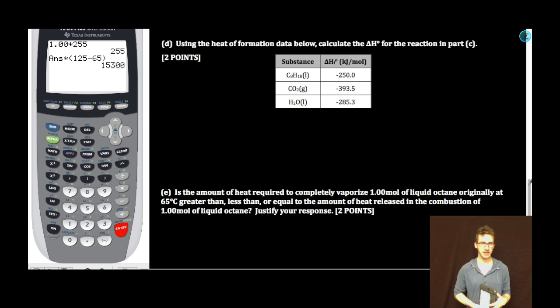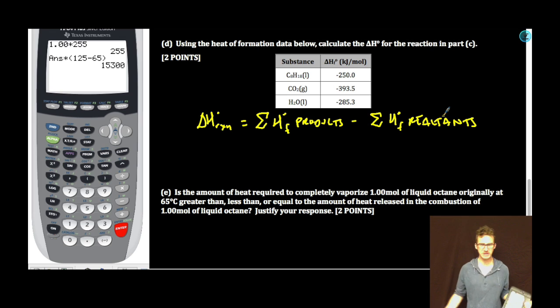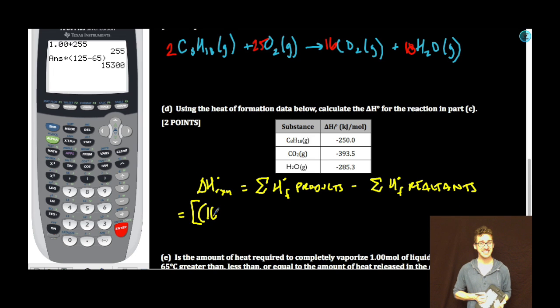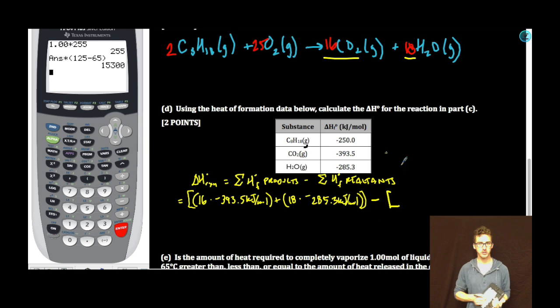Part D: Using the heat of formation data below, calculate the enthalpy change for the reaction in part C. Easy. Enthalpy change of a reaction from heat of formation data. On your formula chart. My products: 16 moles of carbon dioxide plus 18 moles of water, 18 times negative 285.3. Let's do the reactants: 2 moles. Plus 25 moles. Oh my goodness, I can't do this. They didn't give me it in the data table. No, it's an element. Recall that elements in their standard states have enthalpies of formation of 0 kilojoules per mole.